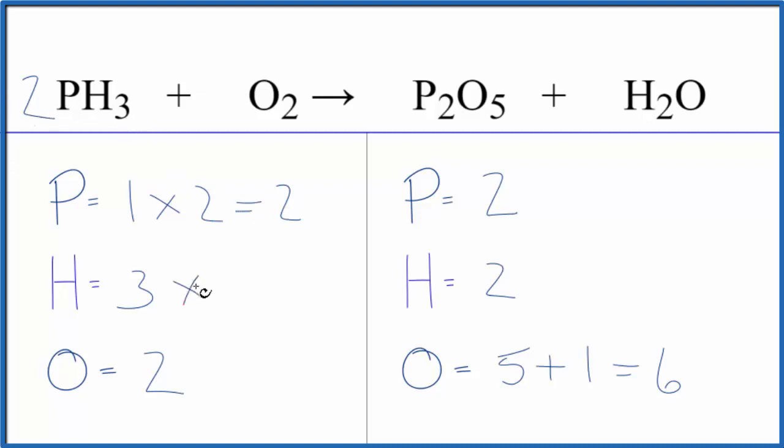3 times 2, that'll give us six hydrogen atoms. Let's just do the hydrogen and see what happens. We have six here and two here. So I'm going to need to put a 3 as my coefficient in front of the water. 2 times 3, that gives me 6, but I do need to update the oxygen atoms now.